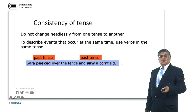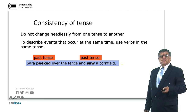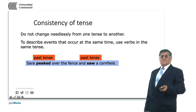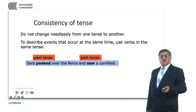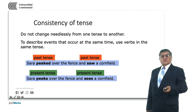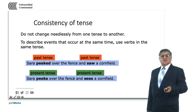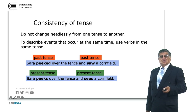We are also using what is obvious — we are talking about Sarah, so we don't need to repeat Sarah in the second clause. The sentence contains two statements: Sarah peeked over the fence, and saw a corn field. That second part should be understood as Sarah saw a corn field, but we don't need to repeat the subject. In the present: Sarah peeks over the fence and sees a corn field — peeks and sees are the third person singular present forms.